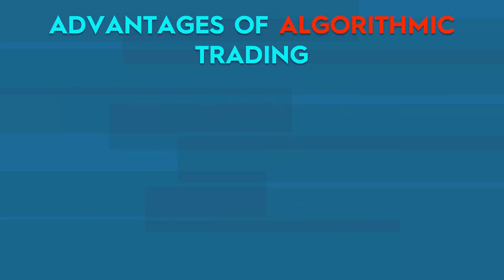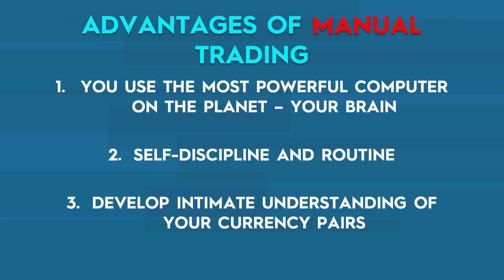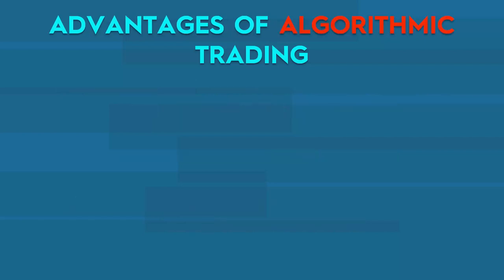Advantages of algorithmic trading — and even though I'm biased toward algo trading, I've tried to present manual trading fairly. Number one advantage of algo trading: freedom of time. By far my favorite advantage — you don't have to sit in front of your computer. Both manual and algo trading can give you financial freedom if you master them, but algorithmic trading also gives you freedom of time so you can do other things while your robots work.